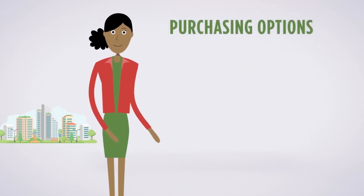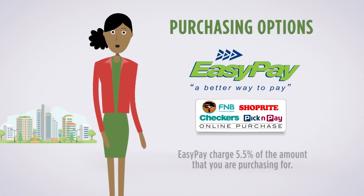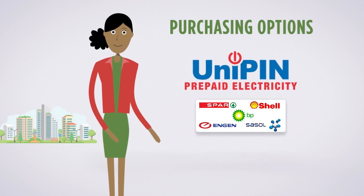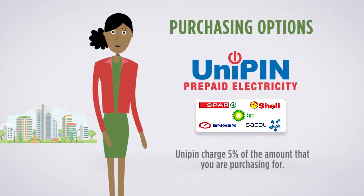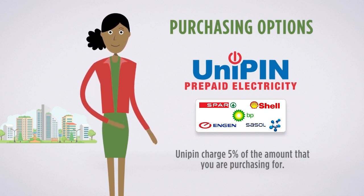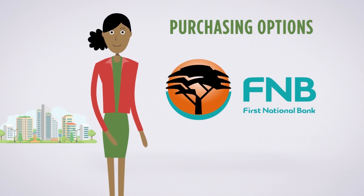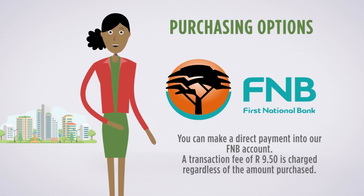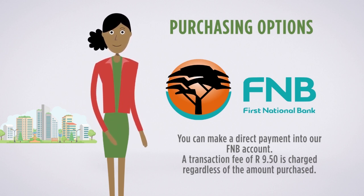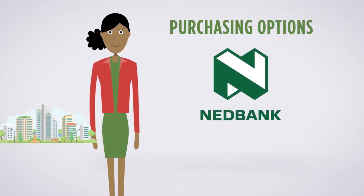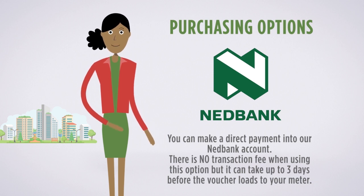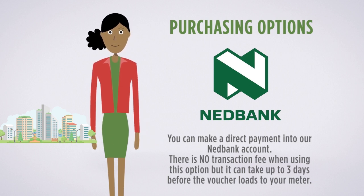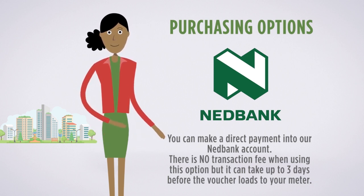Purchasing options: EasyPay charges 5.5% of the amount that you are purchasing for. Unipin charges 5% of the amount that you are purchasing for. FNB: you can make a direct payment into our FNB account. A transaction fee of R9.50 is charged regardless of the amount purchased. NetBank: you can make a direct payment into our NetBank account. There is no transaction fee when using this option, but it can take up to three days before the voucher loads to your meter.